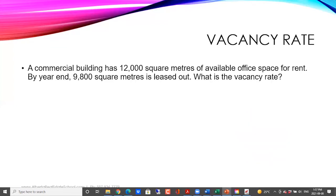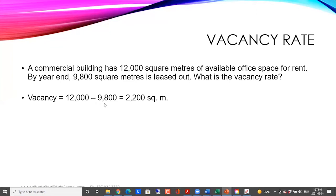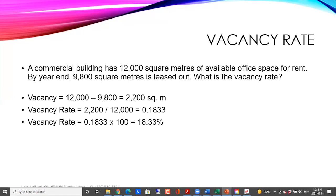Let's take a look at another example. There's a commercial building where we have 12,000 square meters of available space for rent. By the end of the year, 9,800 square meters is leased out. So what is the vacancy rate? First, we find out how much is vacant: 12,000 minus 9,800 gives us 2,200 square meters. Then the vacancy rate is 2,200 divided by 12,000, which gives us 0.1833. Multiplying by 100 gives us a vacancy rate of 18.33%.